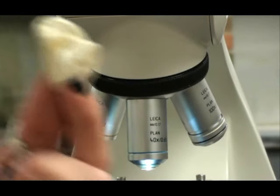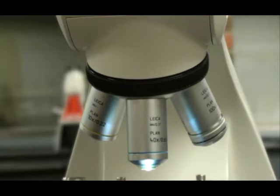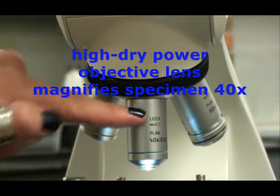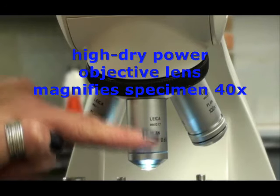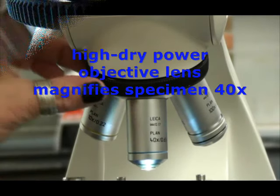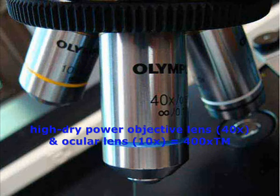But for now, we need to uncover the lens and take a look at it. I can dispose of that finger cot, and now I can see my high dry powered lens. This lens magnifies specimens 40 times actual size. But again, I'm always looking through the ocular and the objective at the same time. So my total magnification at high dry power is 400x.